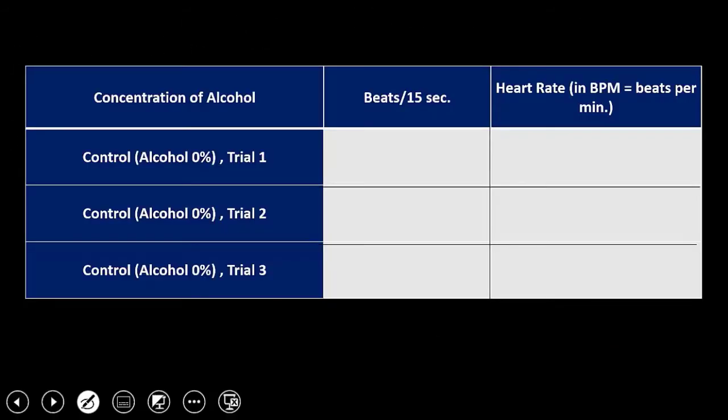For example, if the number of beats counted in 15 seconds is 20, you need to multiply this number by 4 to have beats per minute. Be aware the Daphnia's heart was beating much faster than this number. This is just an example.